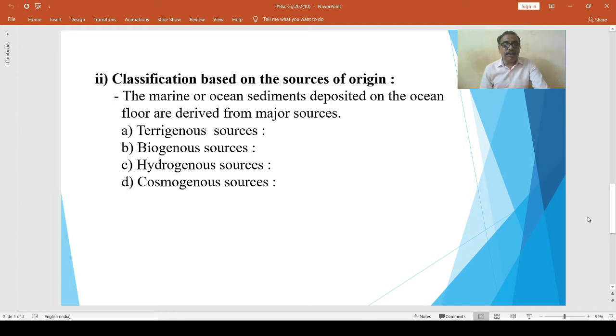These sources are terrigenous sources, biogenous sources, hydrogenous sources, and cosmogenous sources. About the terrigenous materials: these deposits are found on those parts of the ocean floor that lie comparatively closer to the land and are found on the continental shelf and the continental slope. These deposits are derived mainly from the land.